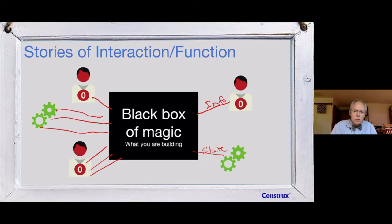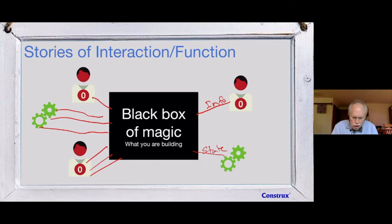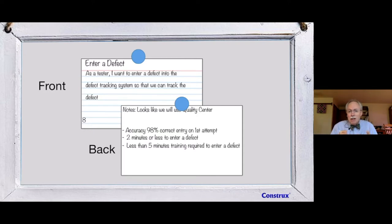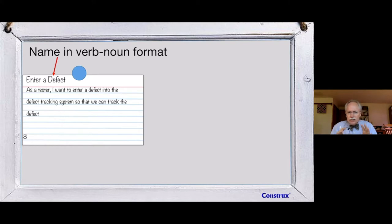When we think about user stories, we first have to think about the stories of interaction with our big black box of magic. A user story is a template we use to capture what those interactions are like. It's helpful to think about a physical card, because the card has a front and a back — and together all this content makes up the full user story.